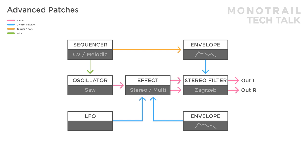Those were all pretty upbeat, so here's the same patch but without the samples and slowed down a lot. A stereo reverb effect is used, and this time I modulate the filter with a complex envelope as well. The shape of that envelope is modulated with a simple LFO.